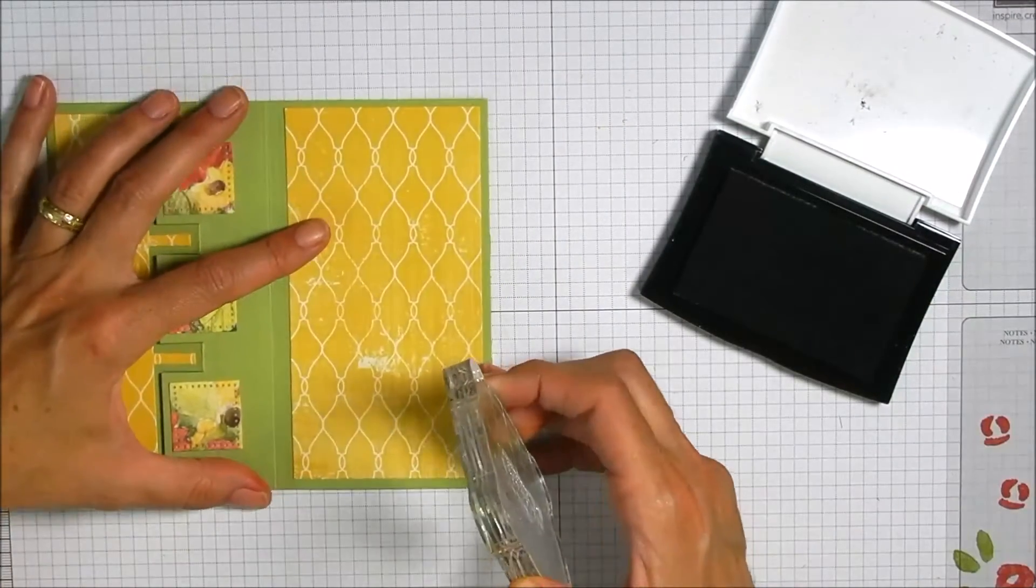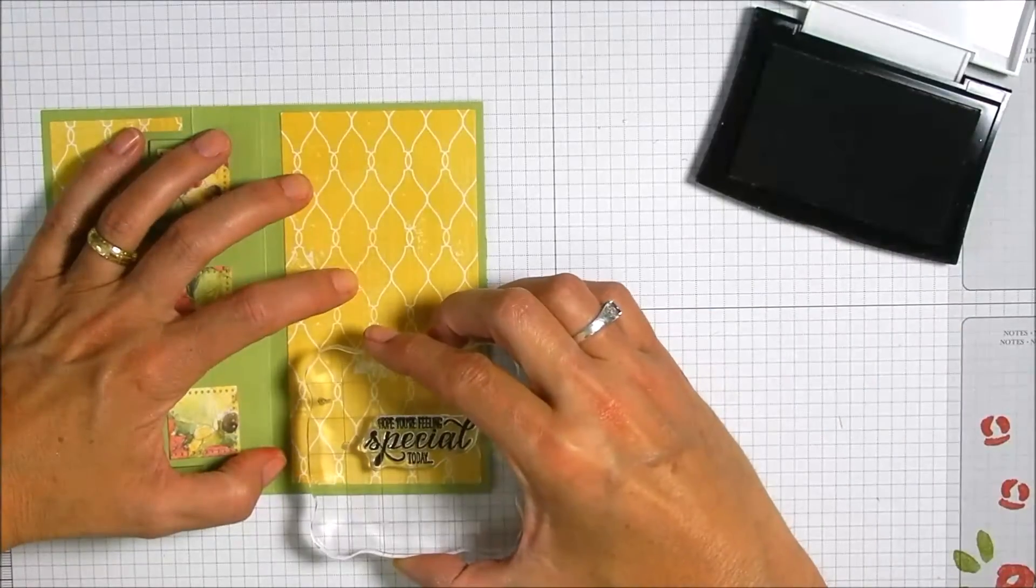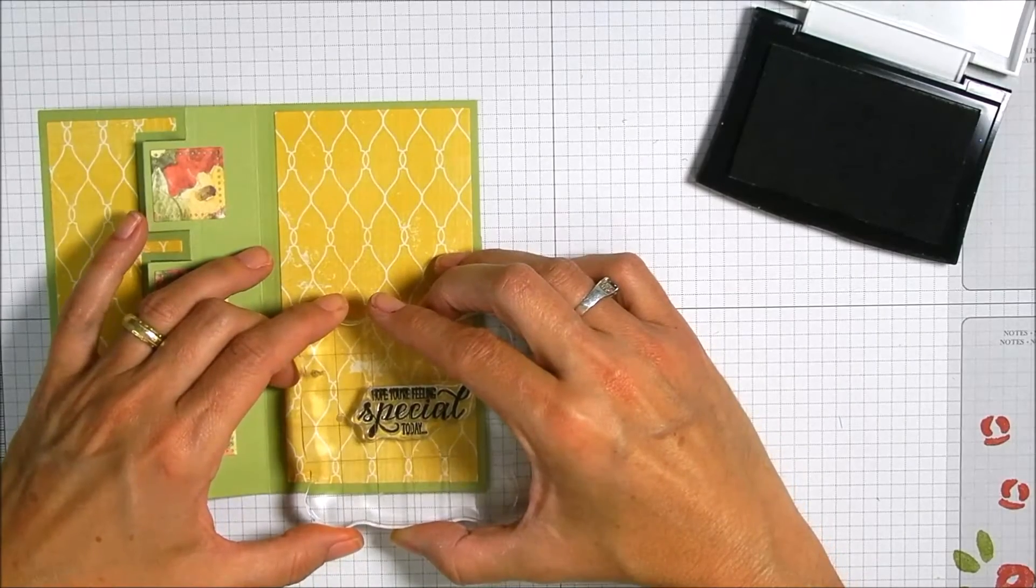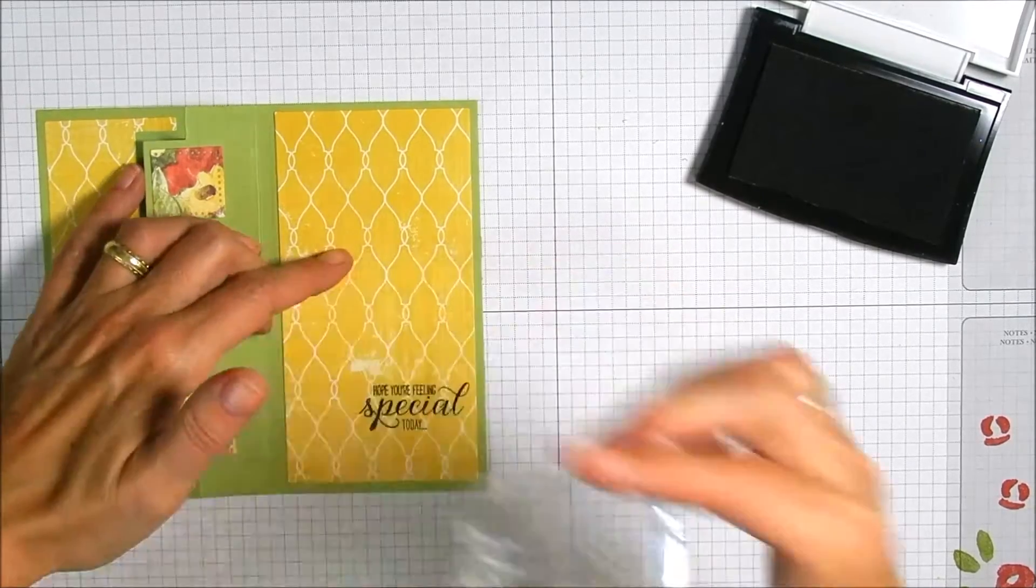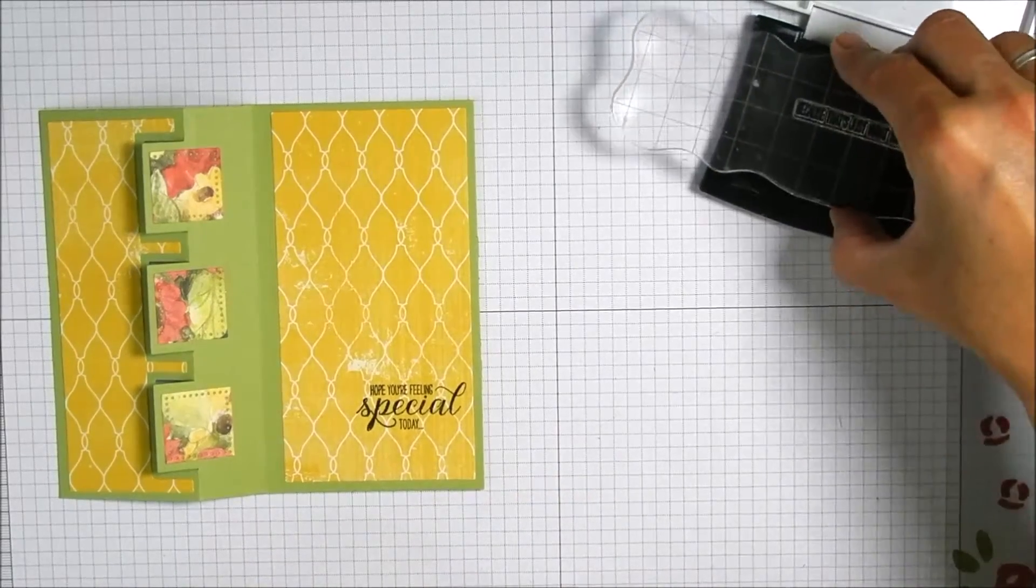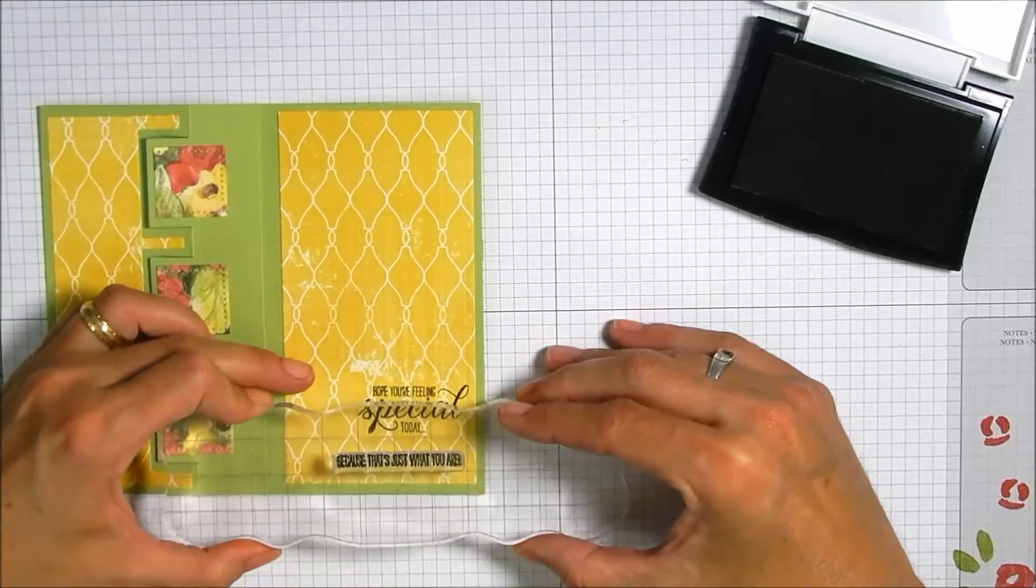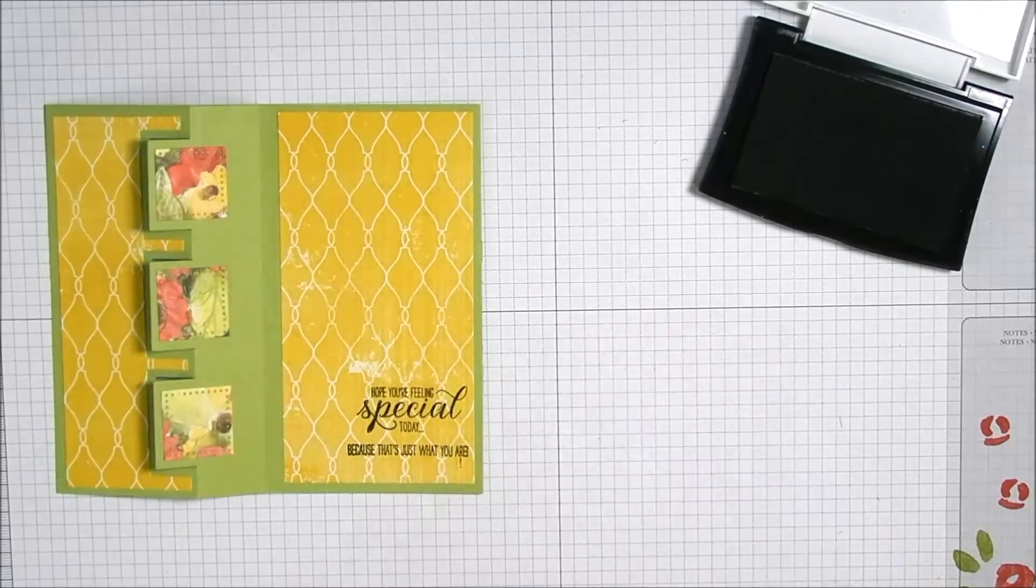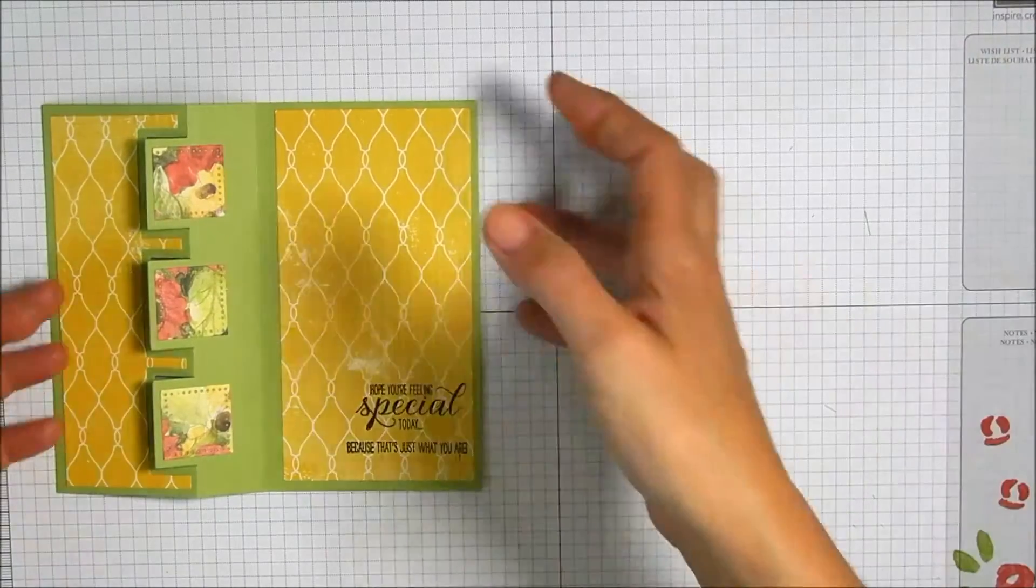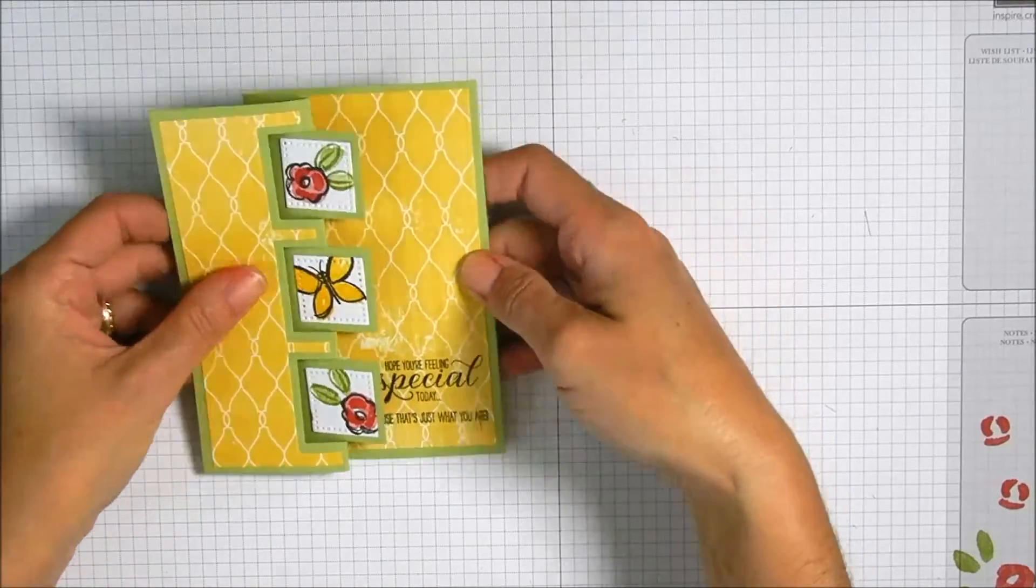I'm just going to get that inked up in the Onyx Black and make sure that it's kind of in there but over to the right so that you can sort of see it when it's open and flipped up. I got some ink on the card, oh well. Line that up so it's nice and straight and stamp it down. You might want to stamp your sentiment before you adhere that patterned paper piece down.